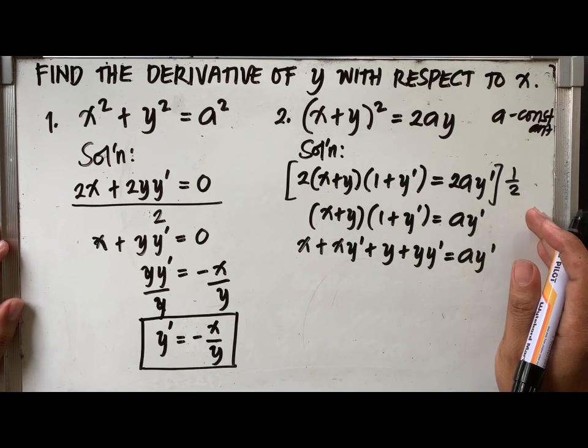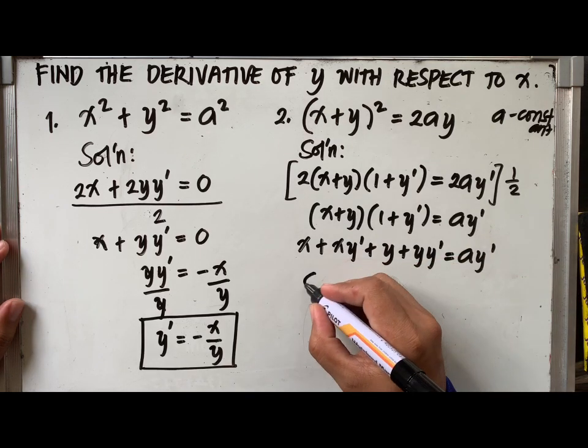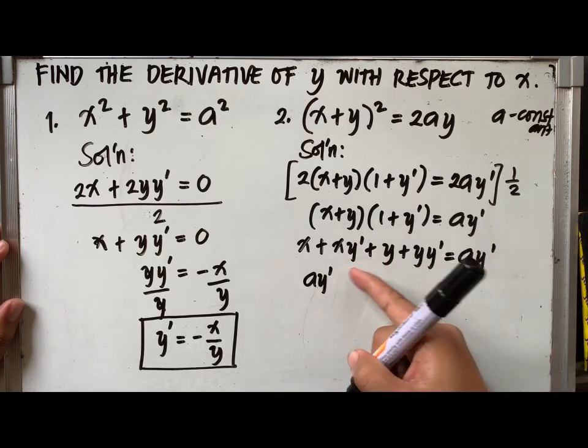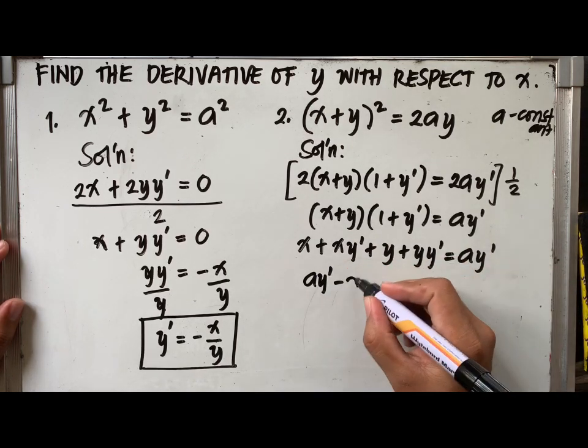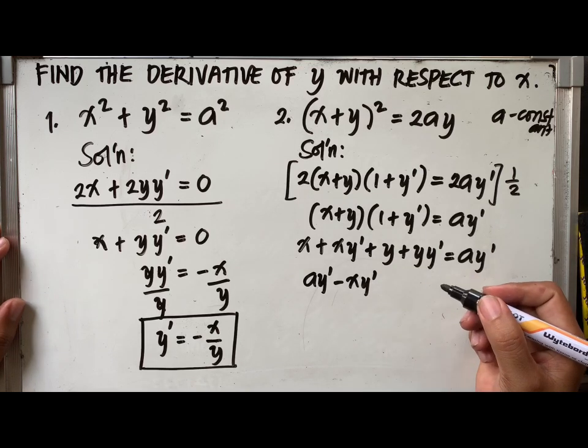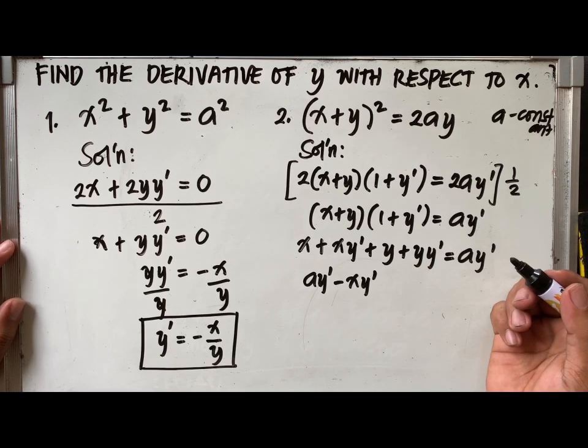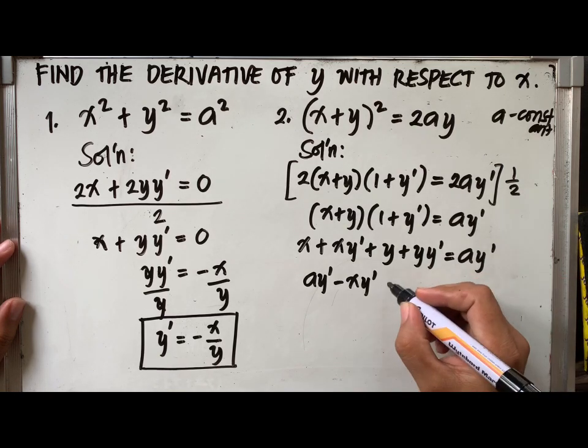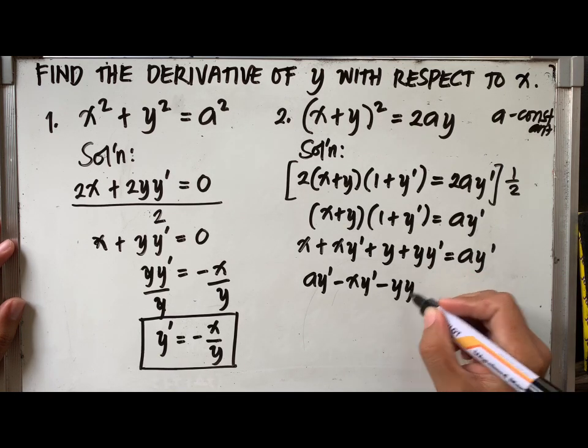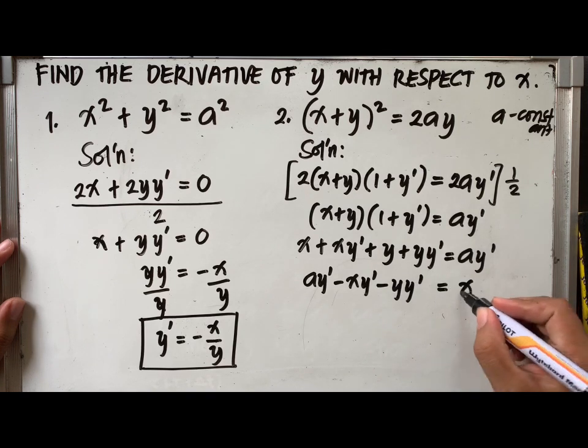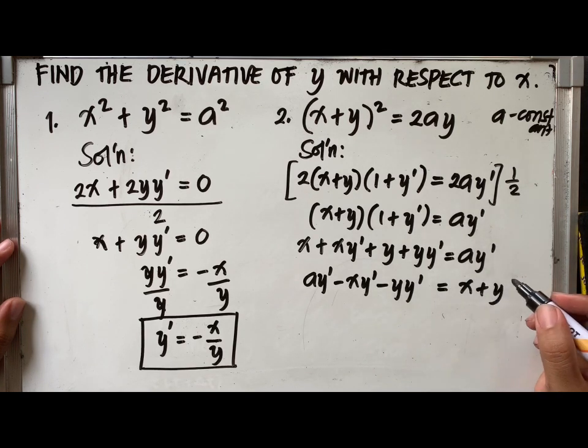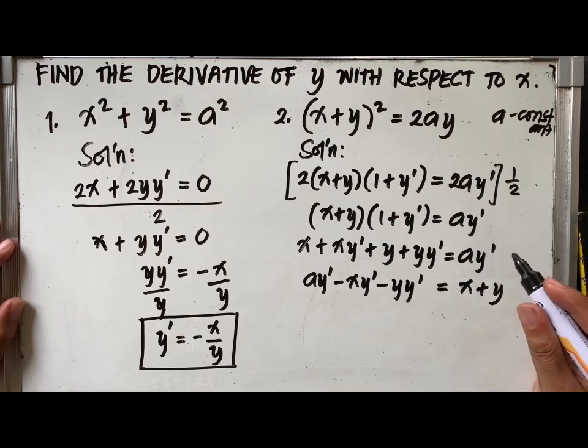Now, eliminate the grouping symbol at the left side of the equation using FOIL method. After doing the FOIL method to remove the grouping symbol, we now transpose the terms with y prime to the other side of the equation. In this example, I have interchanged the positions of the right side and the left side of the equation.